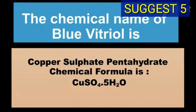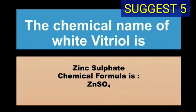The chemical name of blue vitriol is copper sulfate pentahydrate and chemical formula of blue vitriol is CuSO4·5H2O. The chemical name of white vitriol is zinc sulfate and chemical formula is ZnSO4.